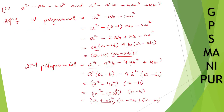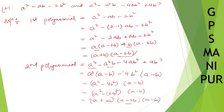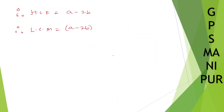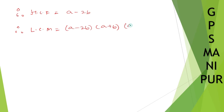For the LCM, we take the common factor (a minus 2b) once, then multiply by the remaining factors. From the first polynomial, (a + b) remains. From the second polynomial, (a minus b) and (a plus 2b) remain. So LCM equals (a minus 2b)(a + b)(a minus b)(a plus 2b). Note that (a + b)(a minus b) can be written as a square minus b square.